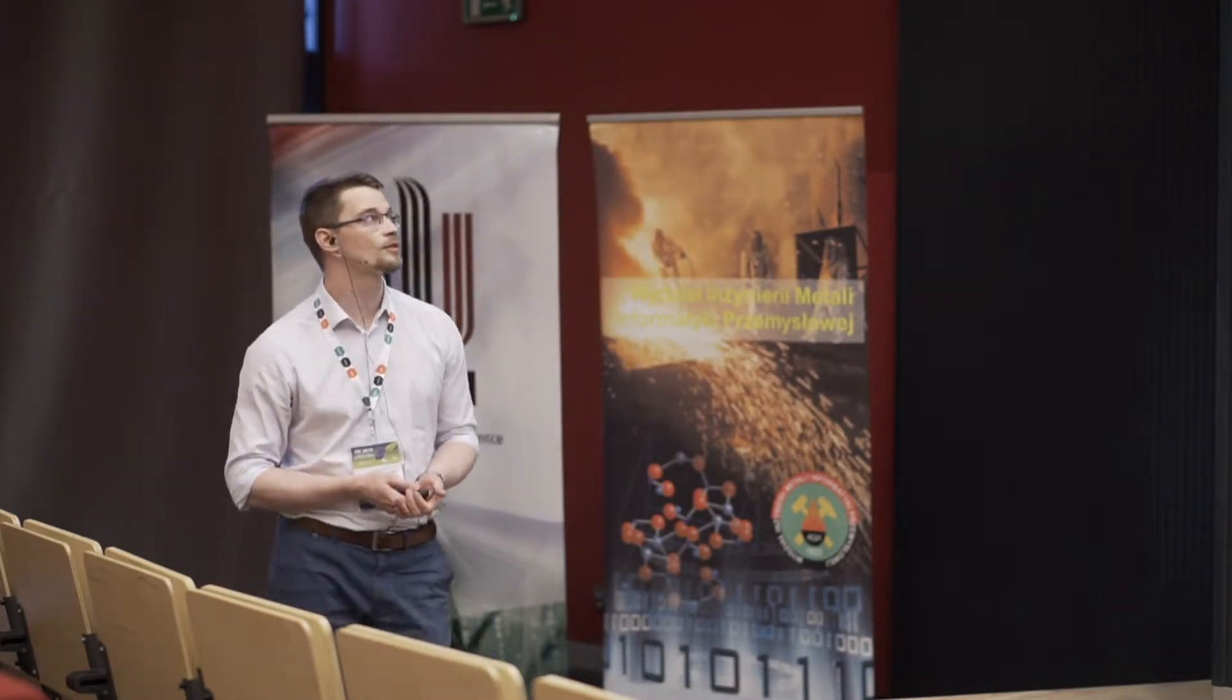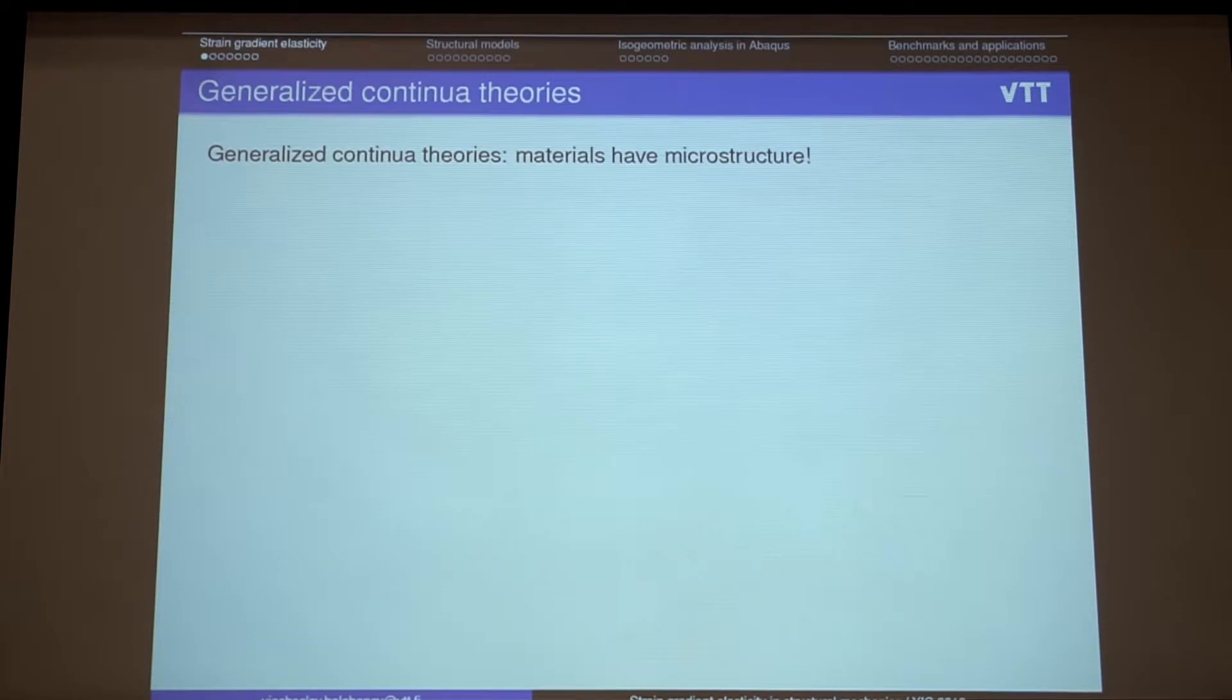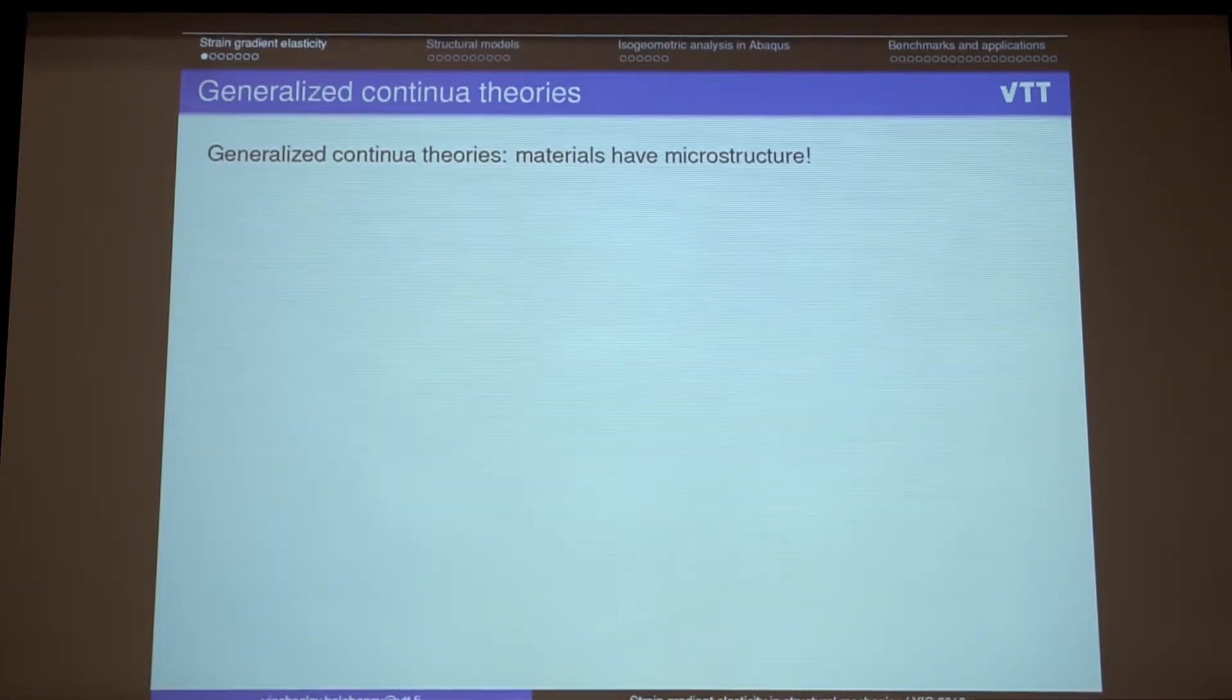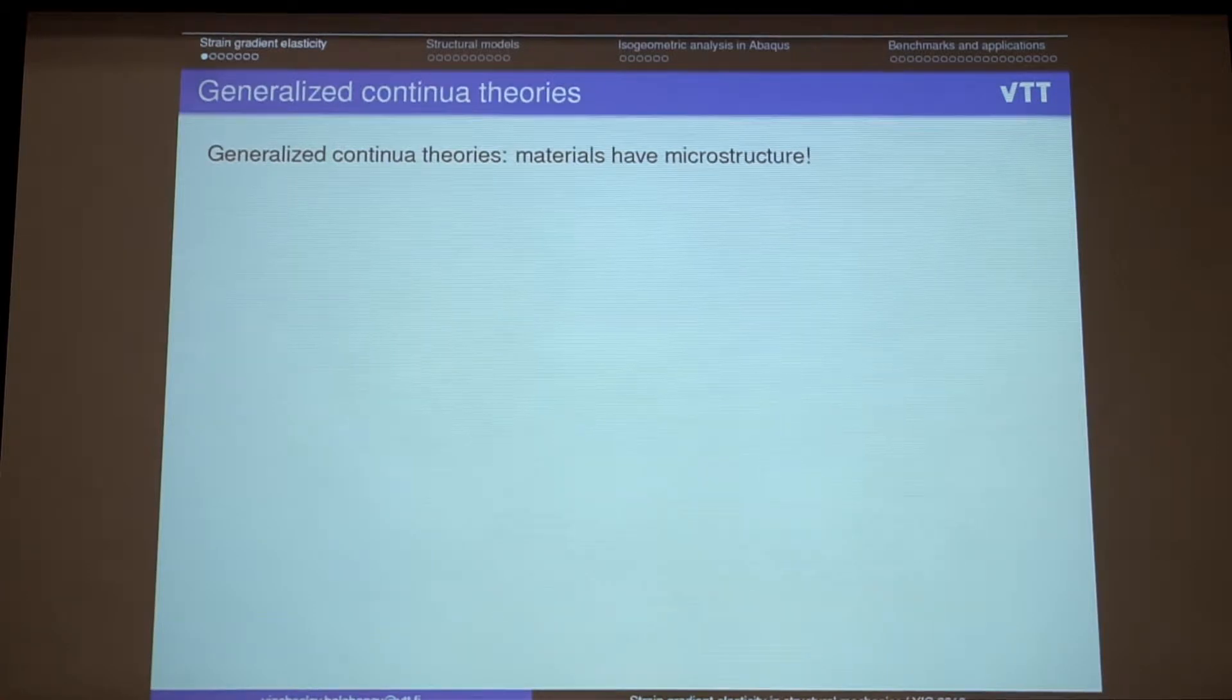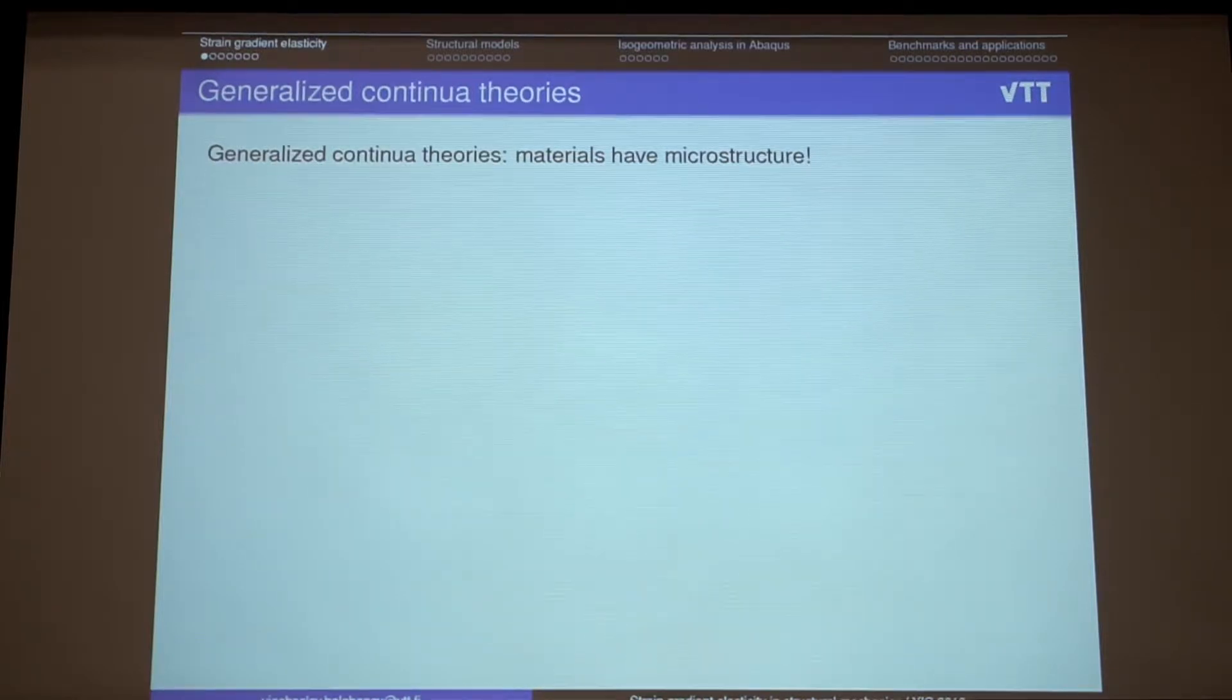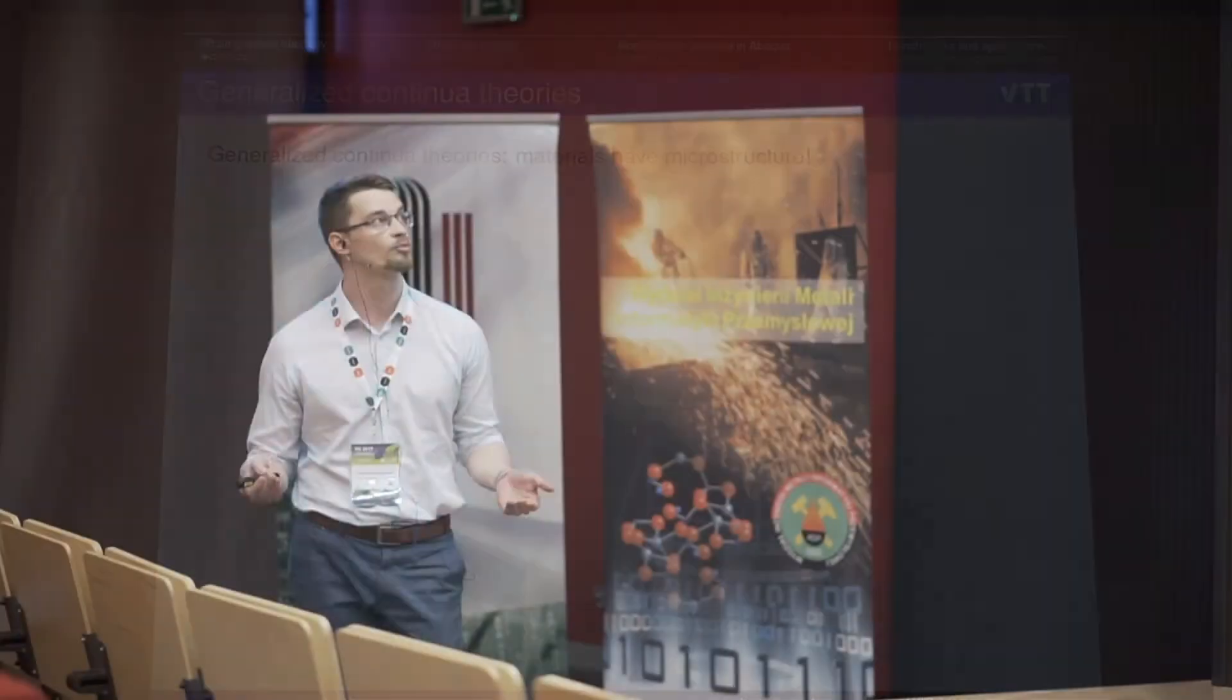So, why, what is the reason, what is the motivation to develop the family of generalized continual theories is the fact that materials have microstructure, and we want to take this microstructure into account when some characteristic length, characteristic sizes of the structure is about of the intrinsic length scale parameters.